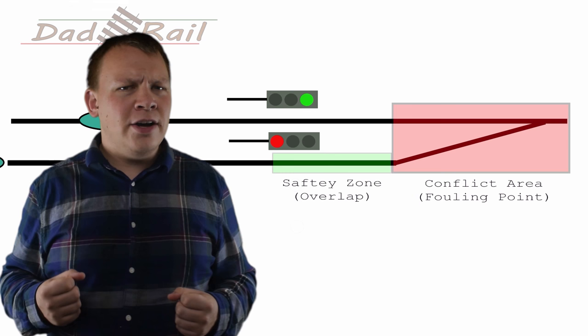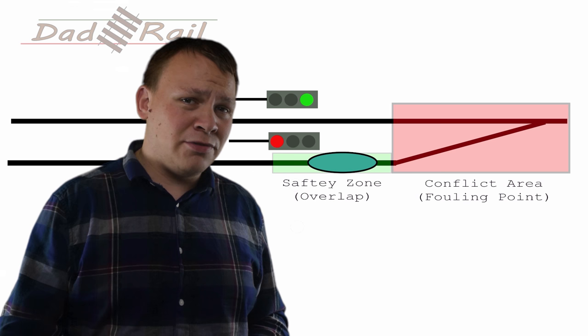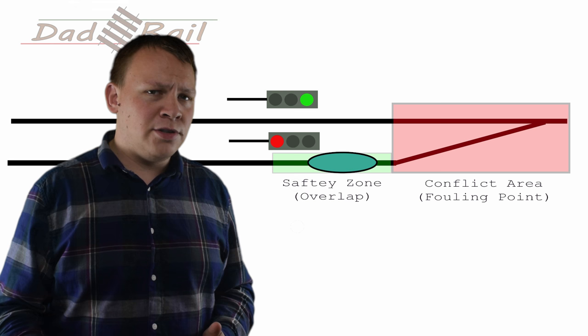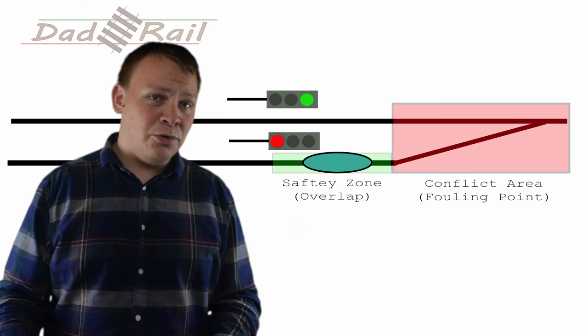The idea of TPWS is that if a driver approaches a red signal too fast, or passes a red signal, the train's emergency brakes are automatically applied, bringing the train to a complete stand. TPWS won't necessarily prevent the driver from going past a red signal, but what it will do is ensure that the train stops within a safety zone beyond the signal, known as the overlap.